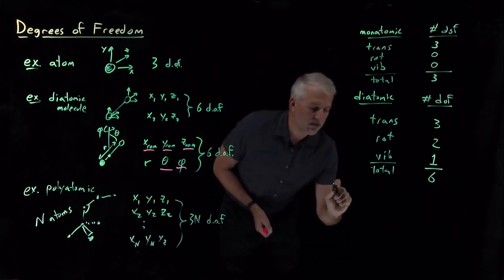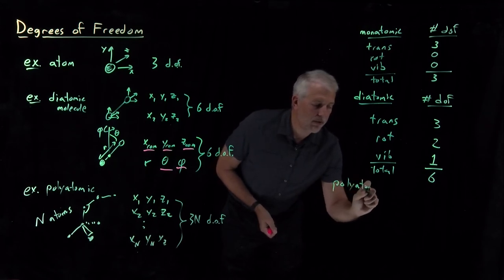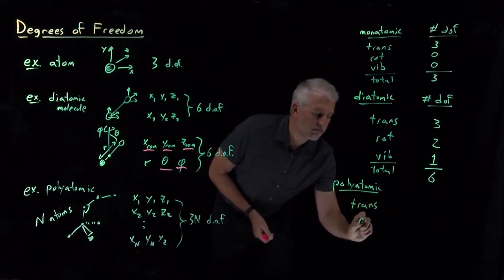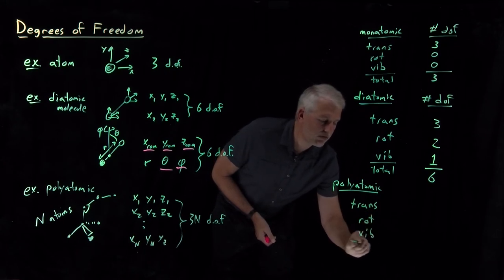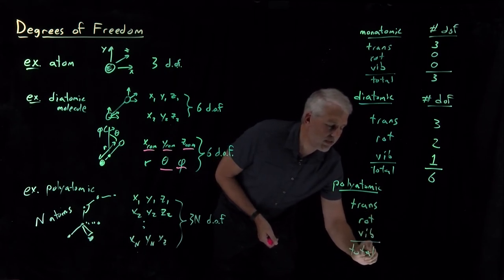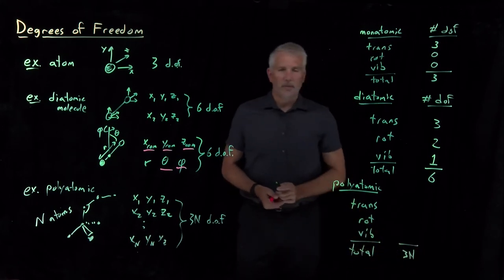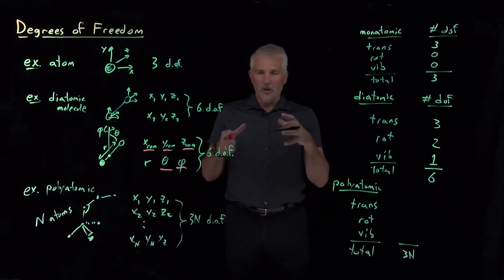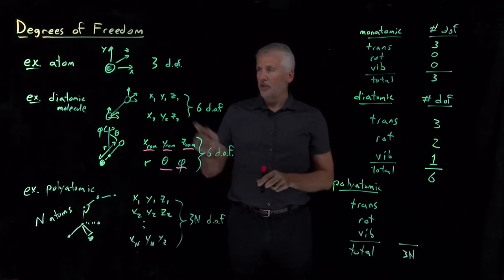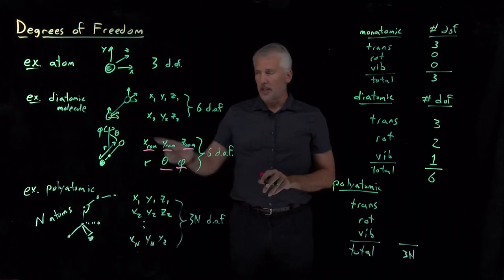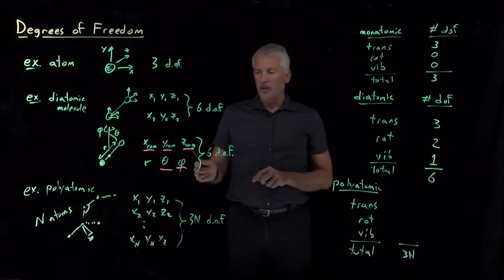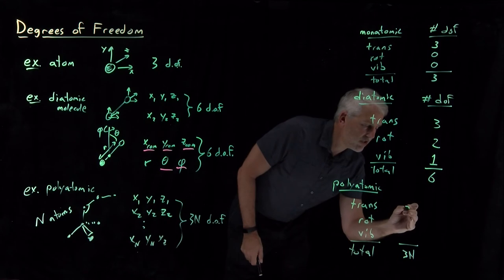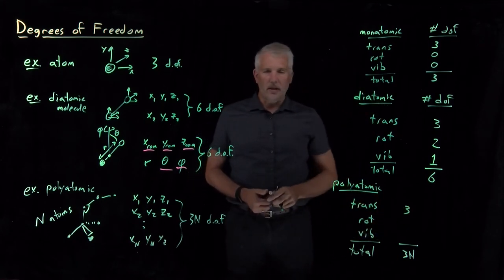If we want to categorize those 3n total degrees of freedom into rotations, vibrations, and translations, that's not too difficult. Translations: just like the monatomic and diatomic cases, the center of mass only needs three coordinates to describe where the molecule is located. No matter how complicated the molecule gets, describing its location requires no more and no less than three degrees of freedom.